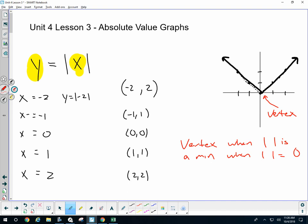The next thing I notice is that the graph of the absolute value of x is symmetrical. Which means, if I know one point to the right of my vertex,